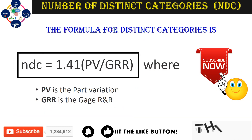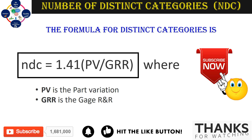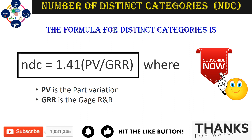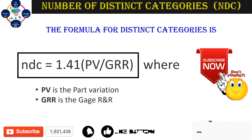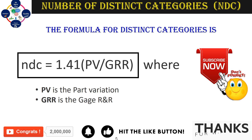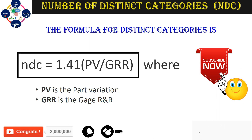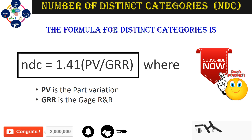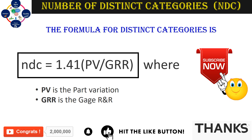The formula to calculate the Number of Distinct Categories is: NDC = 1.41 × √(Part Variation / Total Gauge R&R). In practice, you don't need to calculate the NDC manually using this formula. When you run Minitab, you will get the automatic value of NDC, as the calculation is done by the system itself.